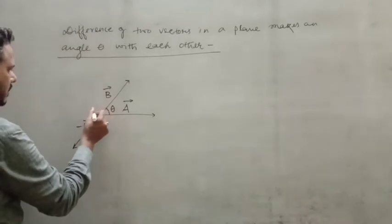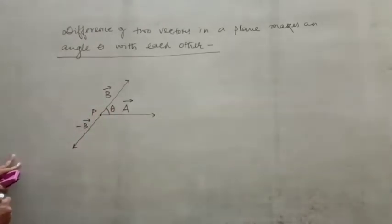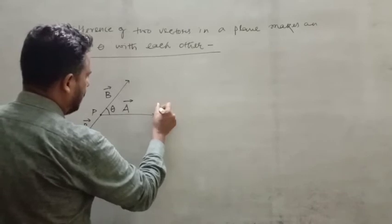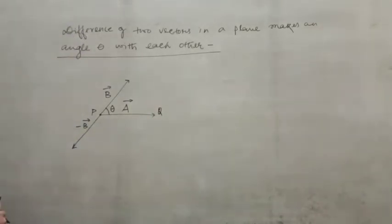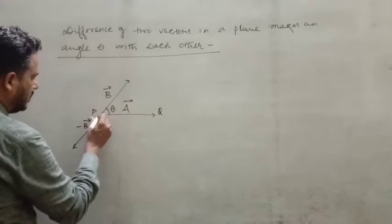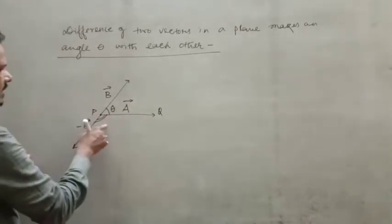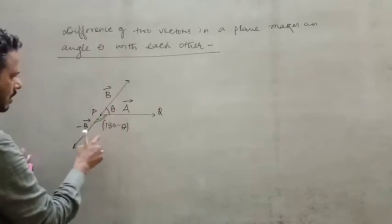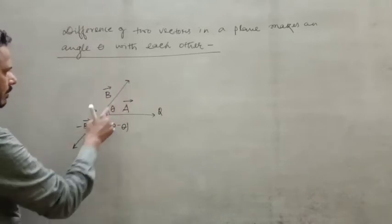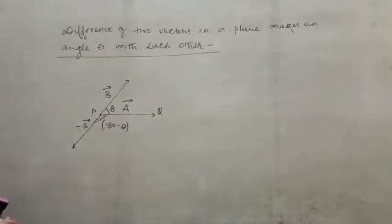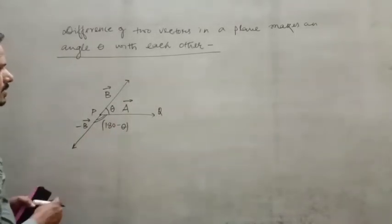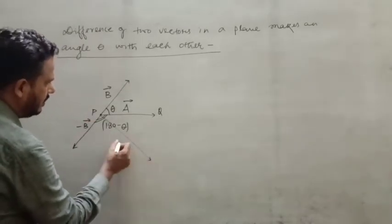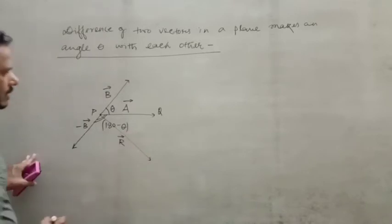We take this point as p and this one as q. So how much is this angle? This angle is 180 minus theta, because all angles on this straight line are 180 — just subtract theta, so 180 minus theta. Then we draw a line to find the sum, and suppose this one is resultant vector r.